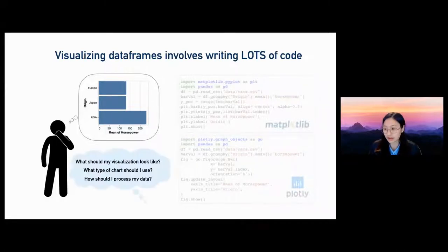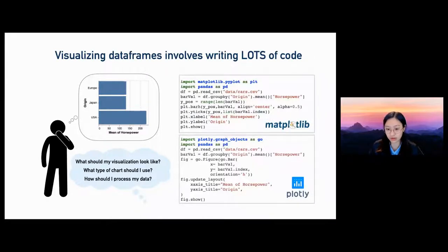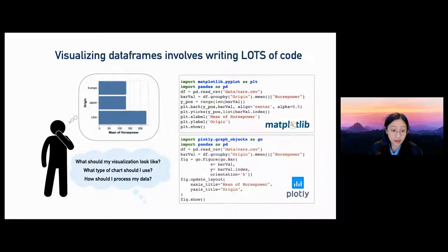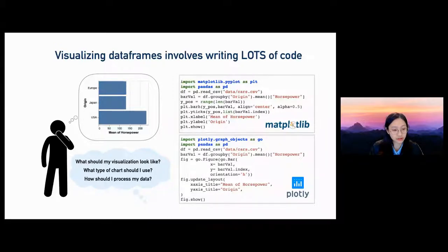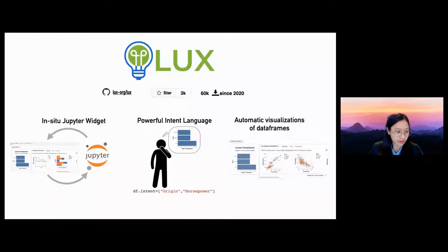Even though the pandas data frame supports a wide variety of functionalities, it's often not easy to figure out what analysis you actually need to get to your insights. Even for a simple task such as visualizing a bar chart, there's still a very high effort required to visualize your data programmatically. First we need to think about what the visualization should look like, what graphical encoding and marks to choose, and then translate those specification details into code. On the right-hand side here we see just the sheer amount of code necessary to generate a single visualization in Matplotlib and Plotly, two very common Python visualization libraries.